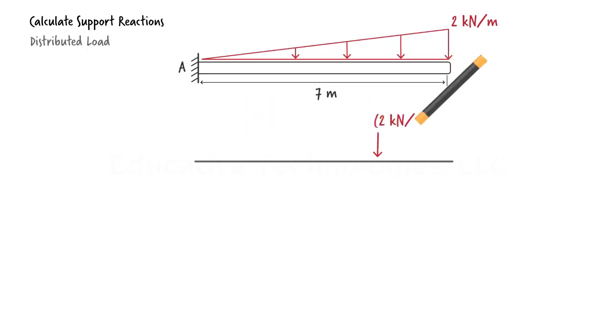On the free body diagram, we are going to replace the distributed load with its equivalent concentrated load. The magnitude of the load is equal to the area of the triangle which has a height of 2 and a base of 7. This gives us a total force of 7 kN. The load is placed at the geometric center of the triangle which is 4.67 meters away from the left end of the beam.